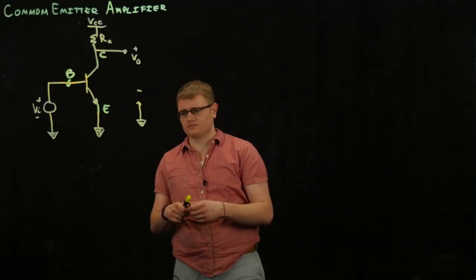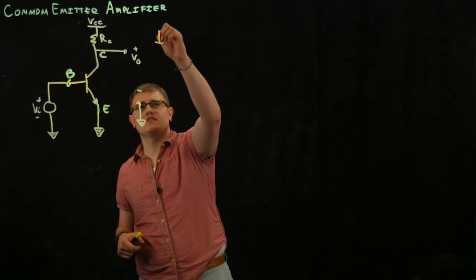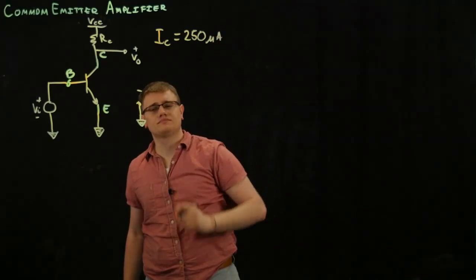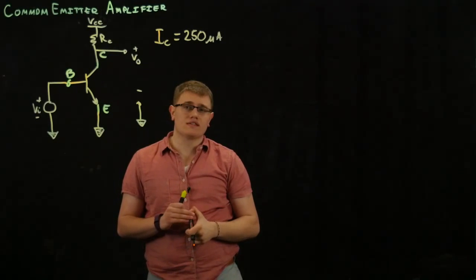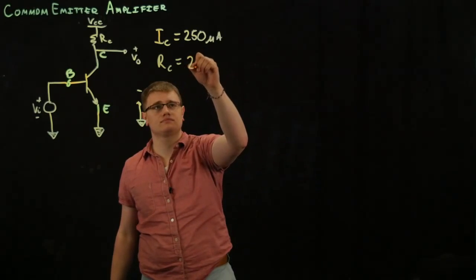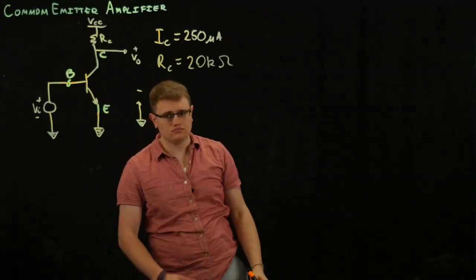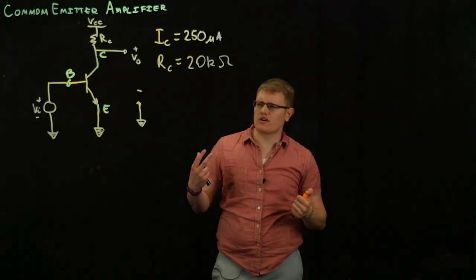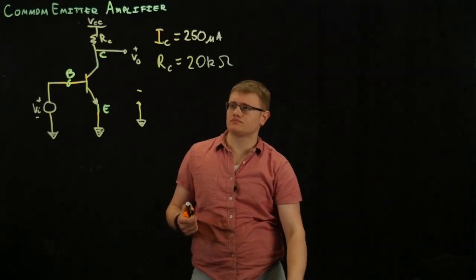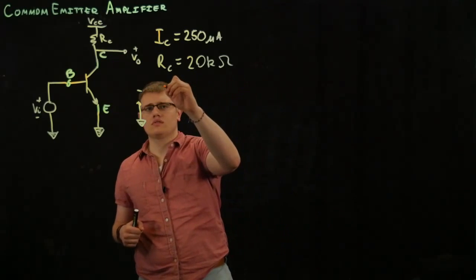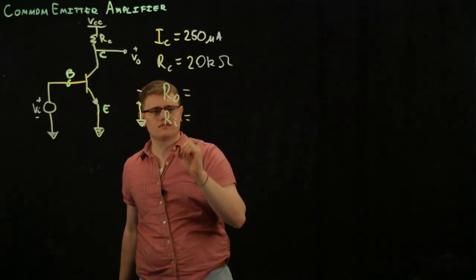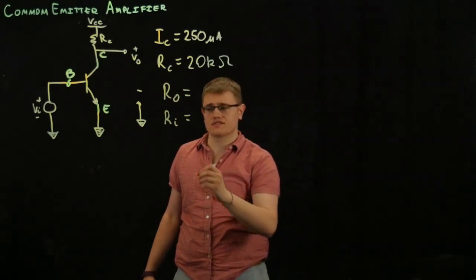Let's say that we know IC, the collector current, is 250 microamps. And let's say that we know the collector resistance, RC, is 20K ohms. So, what do we want to find out? How about, let's find out the output resistance, RO, the input resistance, RI, and the transconductance, GM.